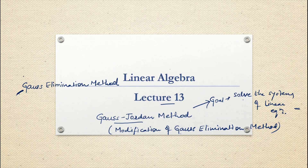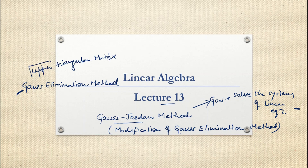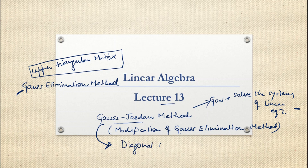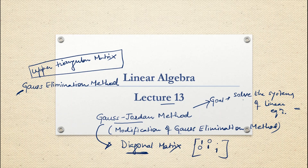If you recall Gauss elimination method, we were reducing the matrix into an upper triangular matrix. In Gauss-Jordan method, we are going to reduce the matrix into a diagonal matrix. That is the key difference between Gauss elimination and Gauss-Jordan method.